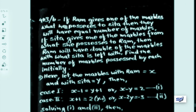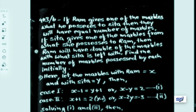Question 403b: If Ram gives one of his marbles to Sita, they will have equal numbers. If Sita gives one of her marbles to Ram, Ram will have double what Sita is left with. Find the number of marbles possessed by each initially. To solve this, let the number of marbles with Ram be x and with Sita be y.